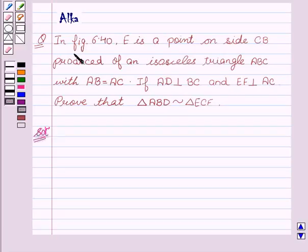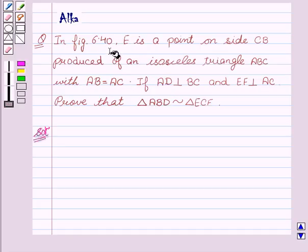Our given question is: in figure 6.40, E is a point on side CB produced of an isosceles triangle ABC with AB equal to AC. If AD is perpendicular to BC and EF perpendicular to AC,